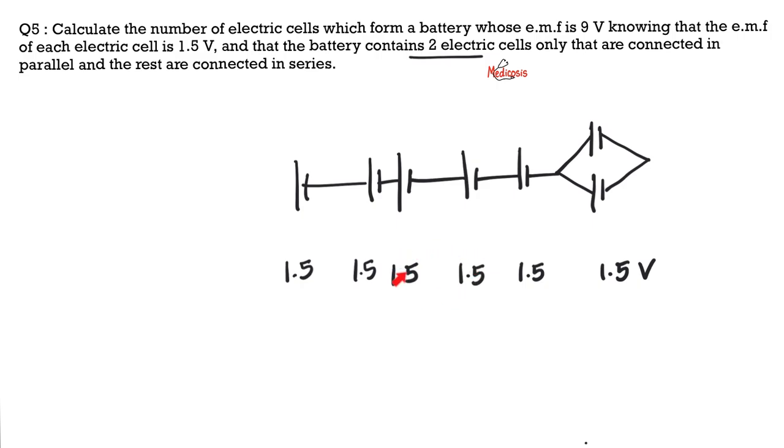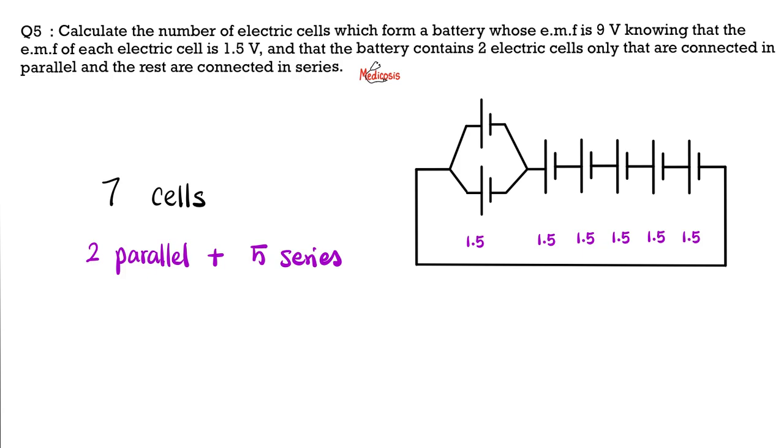This is 3, this is 3, this is 3. 3 plus 3 plus 3 is 9 volts, so this is how you connect your circuit. It's going to be beautiful. So basically, you do 2 in parallel and 5 in series. How many did we use? We used a total of 7 electric cells. Pause and review.